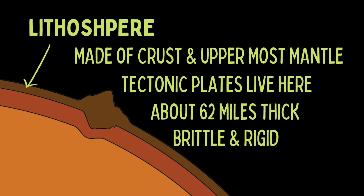The lithosphere is rigid and behaves brittlely, meaning that when stress is applied it will fracture or crack. Tectonic plates are thought to live here — these giant slabs of broken-up lithosphere that move relative to each other. Earth is made up of seven main plates and several smaller ones, and every plate is made up of both continental and oceanic crust, with a few exceptions composed entirely of oceanic crust.